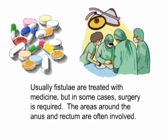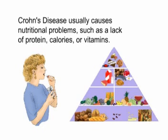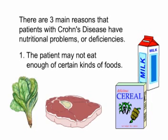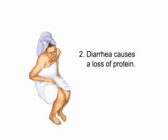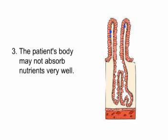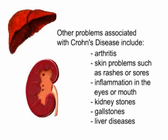Usually fistulae are treated with medicine, but in some cases surgery is required. The areas around the anus and rectum are often involved. Crohn's disease usually causes nutritional problems, such as a lack of protein, calories, or vitamins. There are three main reasons: the patient may not eat enough of certain kinds of foods; diarrhea causes a loss of protein; and the patient's body may not absorb nutrients very well. Other problems associated with Crohn's disease include arthritis, skin problems such as rashes or sores, inflammation in the eyes or mouth, kidney stones, gallstones, and liver diseases.